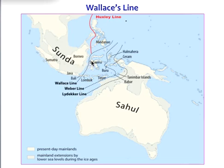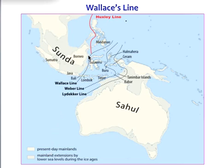Wallace's Line is a faunal boundary line drawn in 1859 by British naturalist Alfred Russell Wallace and named by English biologist Thomas Henry Huxley. This line separates the biogeographical realms of Asia and Wallacea — to the west are organisms related to Asiatic species, and to the east a mixture of Asian and Australian species. The line runs through Indonesia, between Borneo and Sulawesi, and through the Lombok Strait between Bali and Lombok. Distribution of many bird species and larger terrestrial mammals observes Wallace's Line. In general, plural species do not follow Wallace's Line, the exception being eucalyptus.